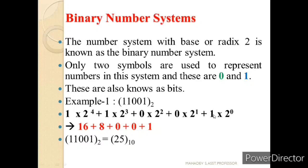Let us understand a simple example of representing a binary number: 11001 base 2. The unit position is 1 × 2⁰, next is 0 × 2¹, then 0 × 2², then 1 × 2³, and 1 × 2⁴. So 2⁴ = 16, 2³ = 8, 0 × 2² = 0, 0 × 2¹ = 0, and 1 × 2⁰ = 1. Adding these: 16 + 8 + 0 + 0 + 1 = 25. So 11001 in binary is 25 in decimal.